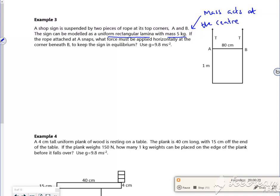So if it's one metre tall, it's half a metre high the centre. If it's 80 centimetres wide, it's 0.4 metres. So here in the middle is where my 5G acts.